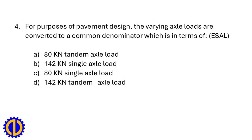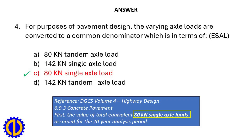For purposes of pavement design, the varying axle loads are converted to a common denominator in terms of equivalent single axle load. a. 80 kN tandem axle load, b. 142 kN single axle load, c. 80 kN single axle load, d. 142 kN tandem axle load. Answer: c. 80 kN single axle load. Reference: DGCS Volume 4, Highway Design — the value of total equivalent 80 kN single axle loads assumed for the 20-year analysis period.